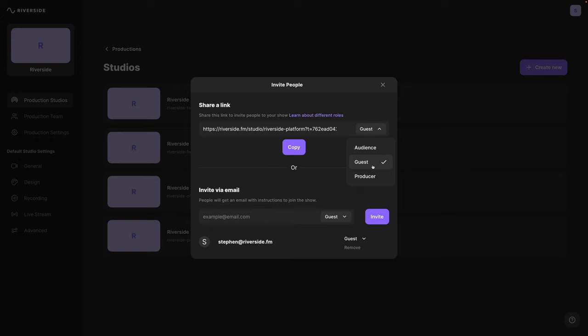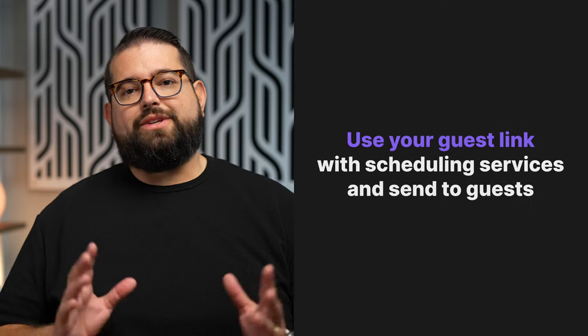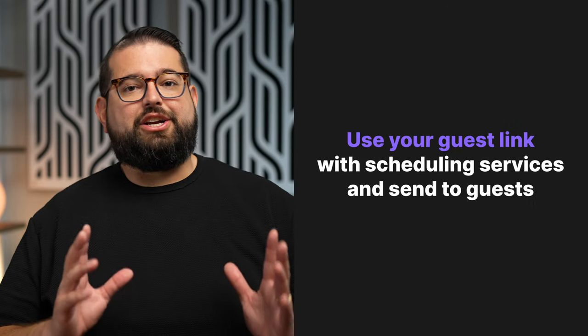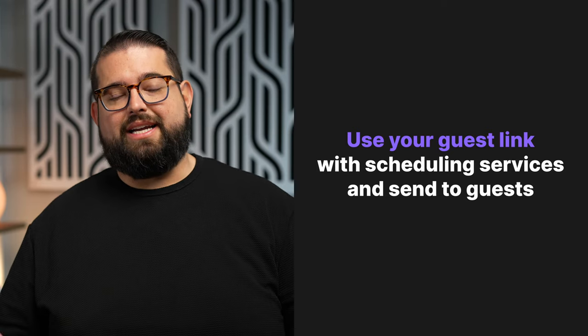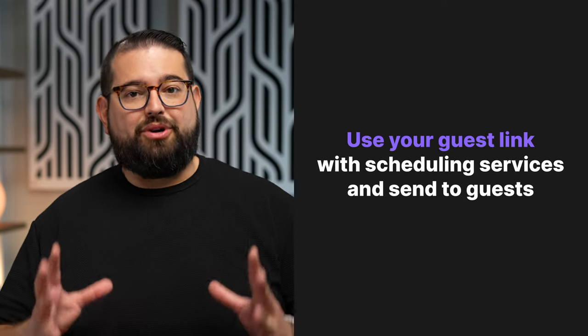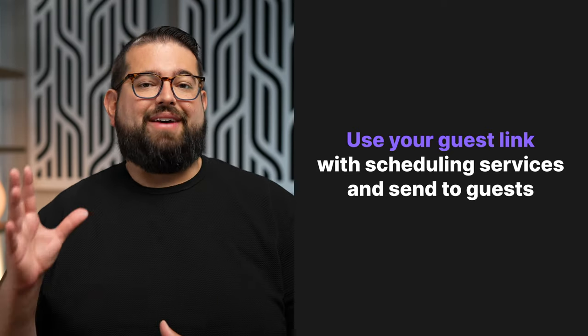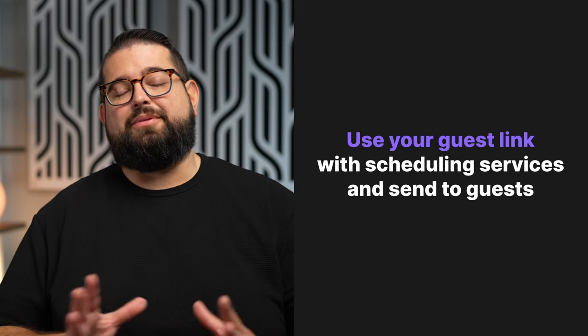A producer can see the technical aspects of the call, share their screen, start presentation slides, and keep an eye on audio levels, but producers are not recorded. If you were streaming live, you'd send the audience link out — with that link someone can view your studio live if it's set as public. For any interview you're conducting, even with multiple guests, choose the guest link from the dropdown and click copy. Once you have that guest link, you can include it in your Calendly account so anytime someone books a recording time, they'll have access to the Riverside guest link.